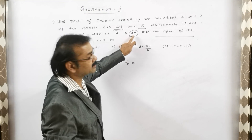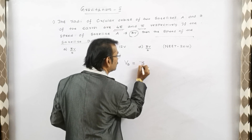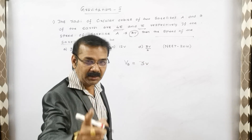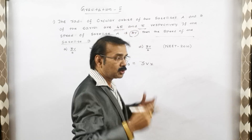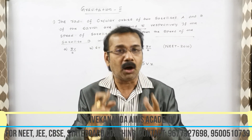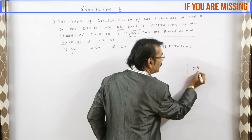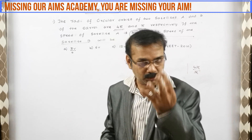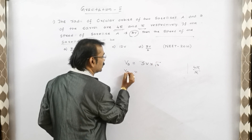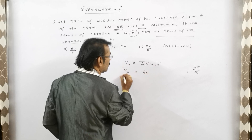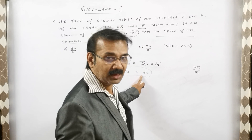See this shortcut: Vb equals the first velocity, which is 3p. Now multiply — take the ratio of the radii: 4r divided by r gives us 4. Then we get Vb equal to 3 multiplied by 2, which is 6v. We got the answer in a fraction of a second with a single step — the answer is 6v.